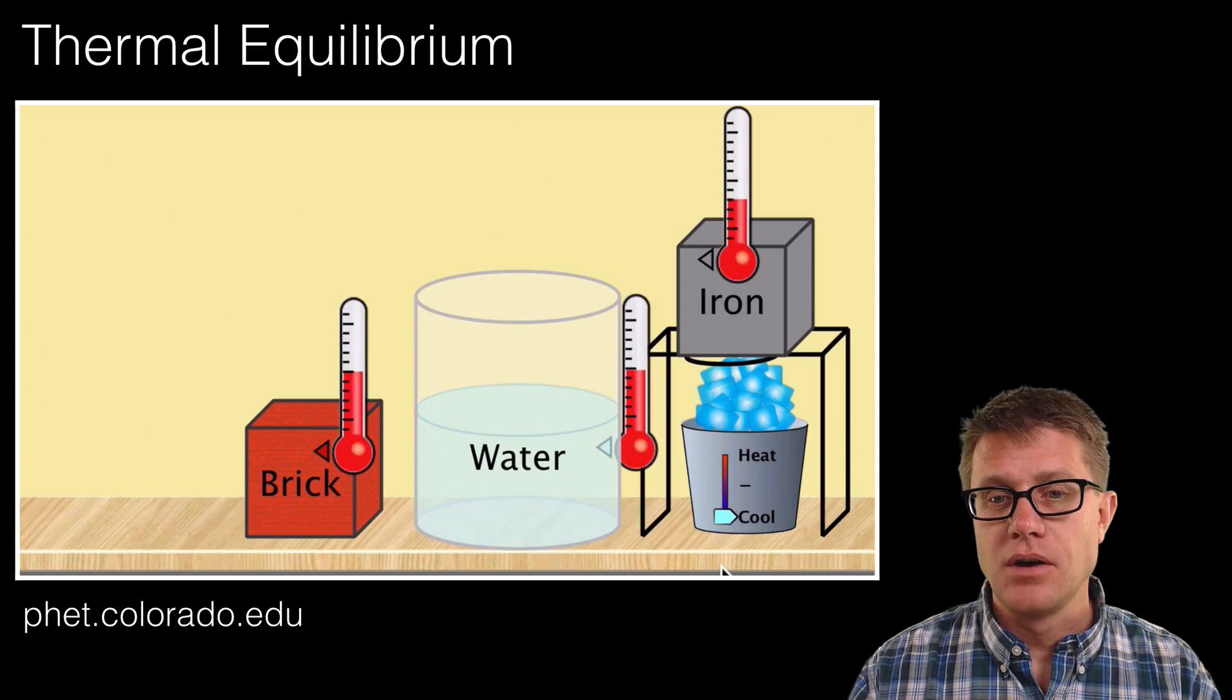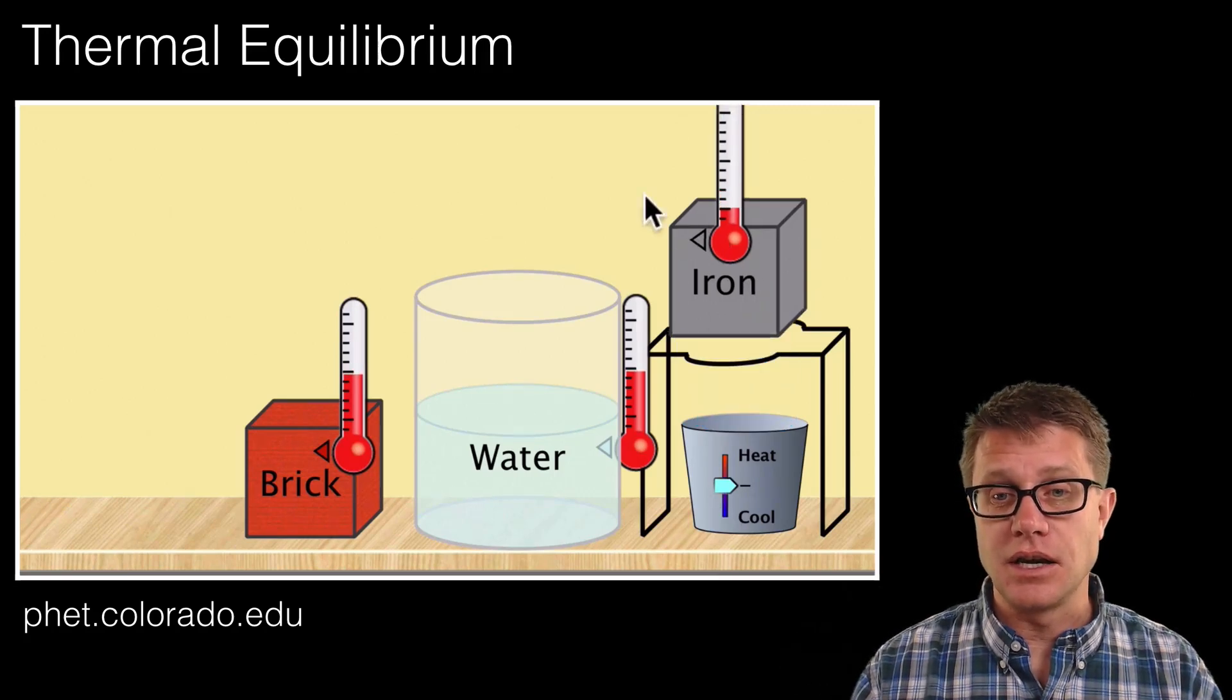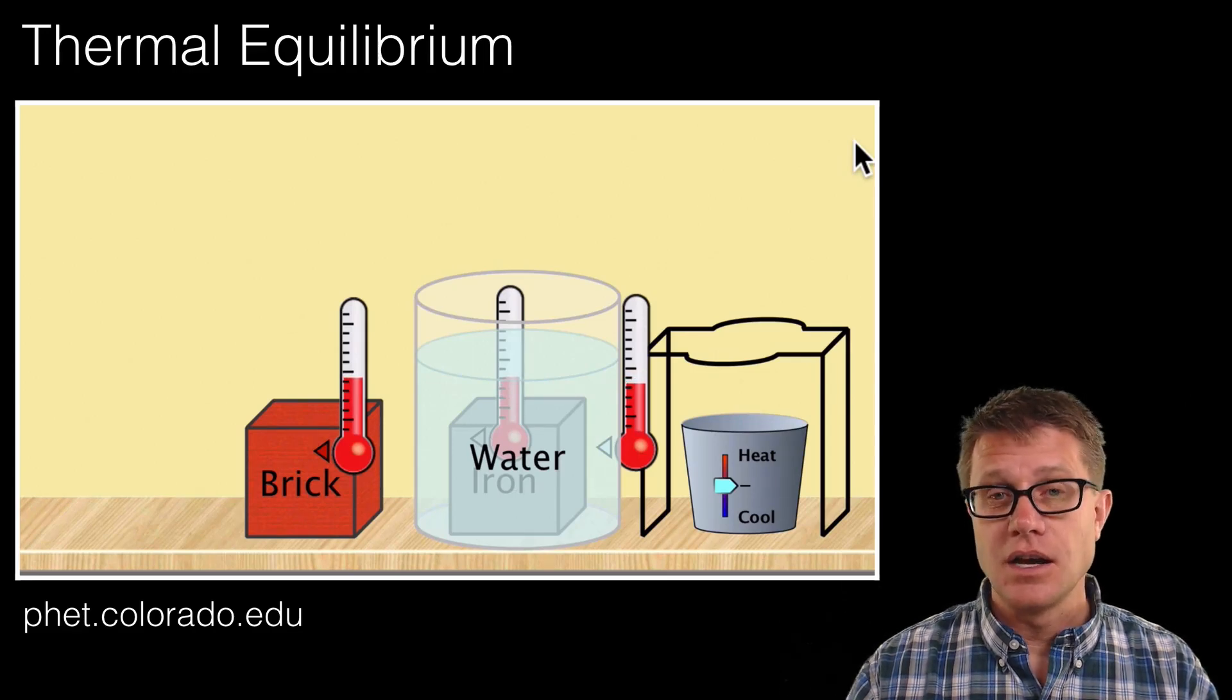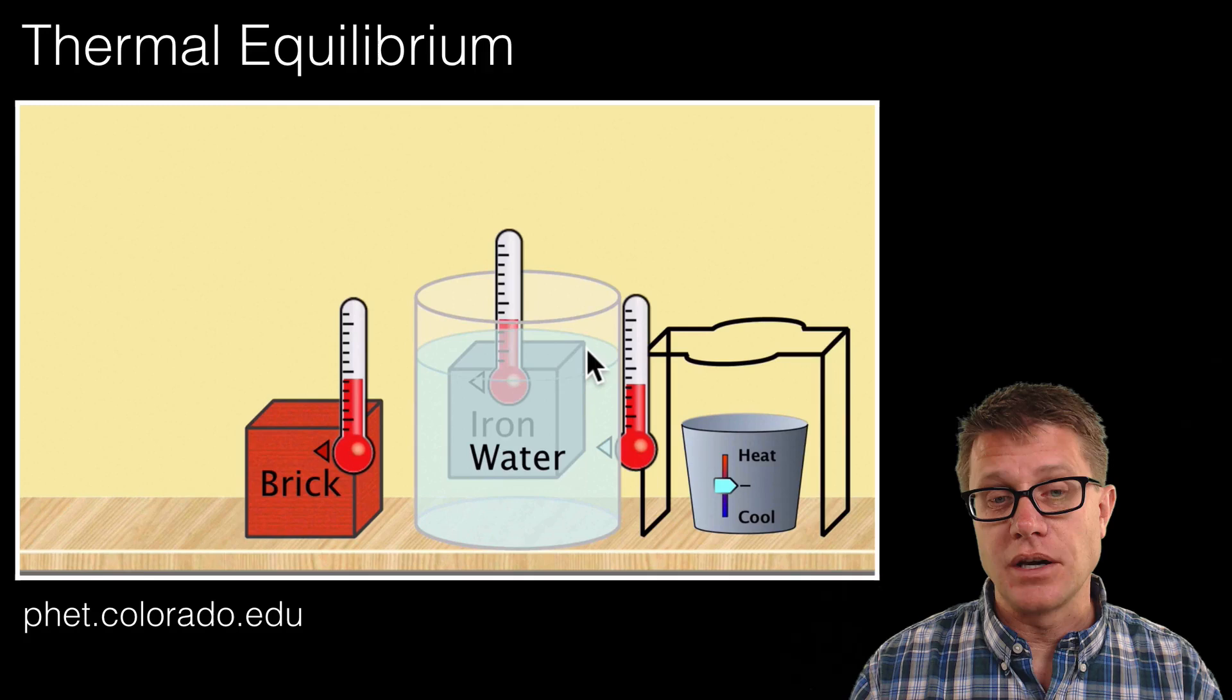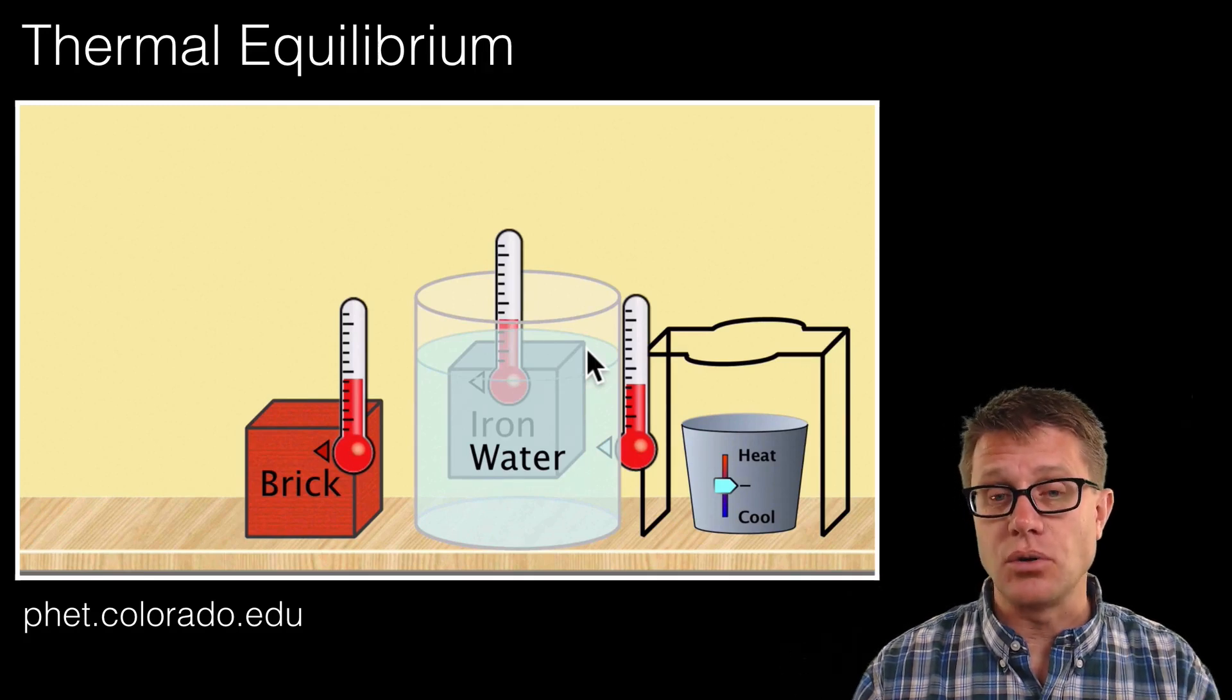What happens if I cool it down? Now I am removing energy from that. It is going into the ice itself. What happens? Now I see a decrease in the water and an increase in the iron. So it is easy to figure out where that thermal energy is going. It is always going from the hotter object to the colder object.